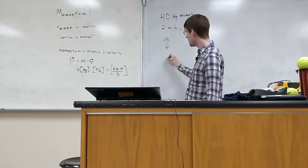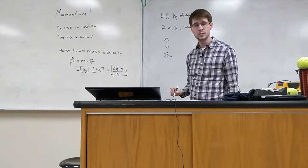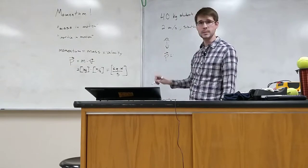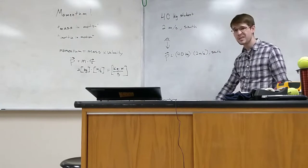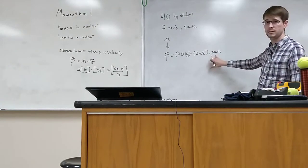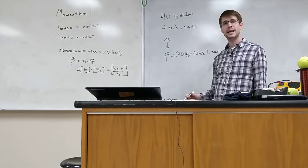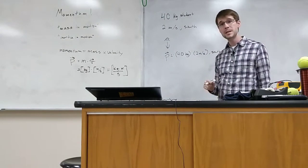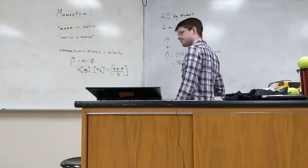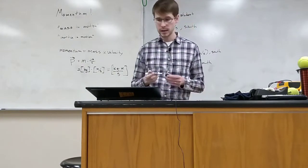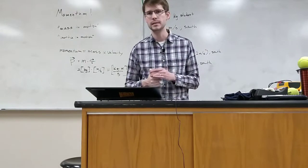To figure it out, we just plug it in. So we've got the momentum vector is going to be equal to the mass times the velocity. Since it's a vector, we have to include the direction. And so what we get here is 80 kilogram meters per second south. And for basic momentum calculations, it's really that easy. We're just putting it together, multiplying the mass times the velocity.